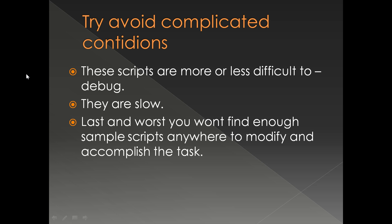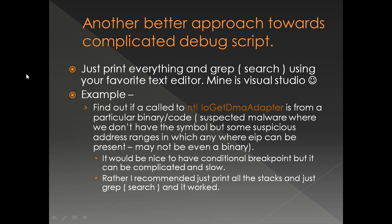So what is the alternative? This is my personal recommendation — it may not work in all scenarios but it may cover at least 95% of cases where you wanted to put a complicated conditional breakpoint. It is a very simple approach: for each hit of the breakpoint, just print everything you need. If you need the parameter, print it using display commands like du, da, dc, or the stack. Save that debugger output to a file and use something like grep, or Visual Studio, to search inside that text file.